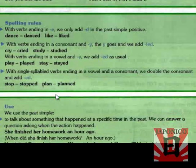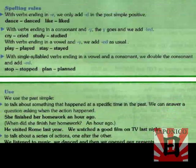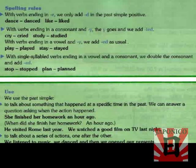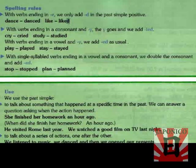Now we have some spelling rules. With verbs ending in E, we only add D in the past simple positive. For example: 'dance' becomes 'danced'; 'like' becomes 'liked'. Verbs that end in E — we only add a D. This applies only to regular verbs in the past tense.